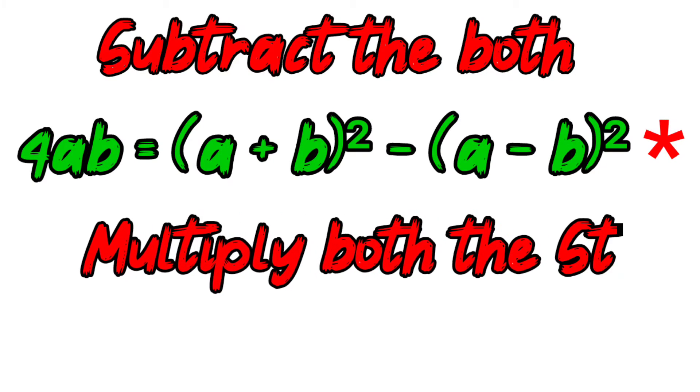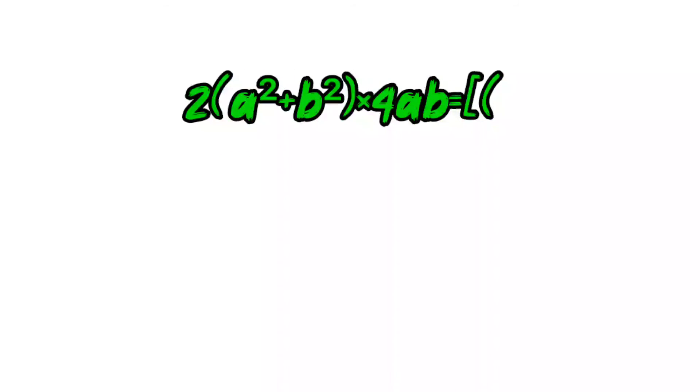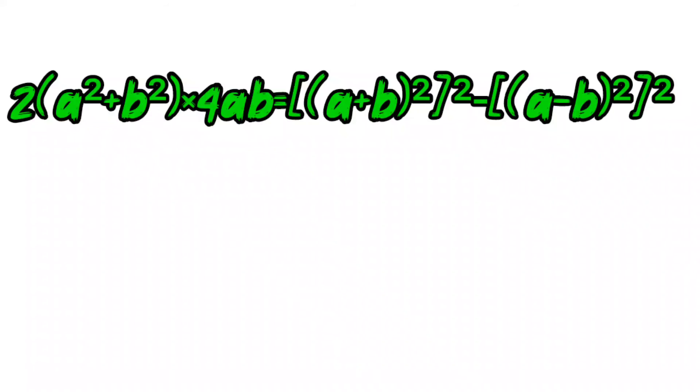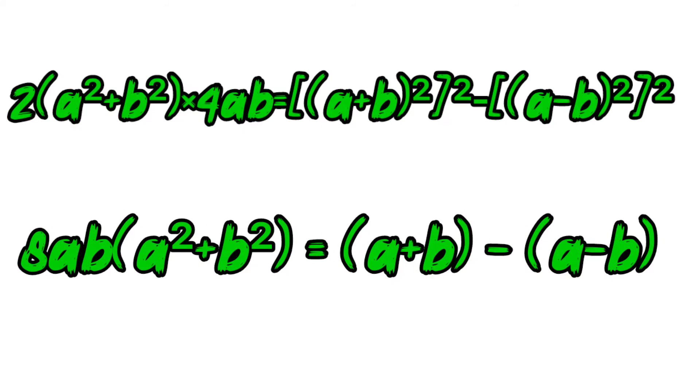Multiply both the stars. Star multiplied by star. 2 into a square plus b square multiplied by 4ab is equal to a plus b square then square bracket and whole square minus a minus b whole square square bracket and square. 8ab into a square plus b square is equal to a plus b raise 4 minus a minus b raise 4.